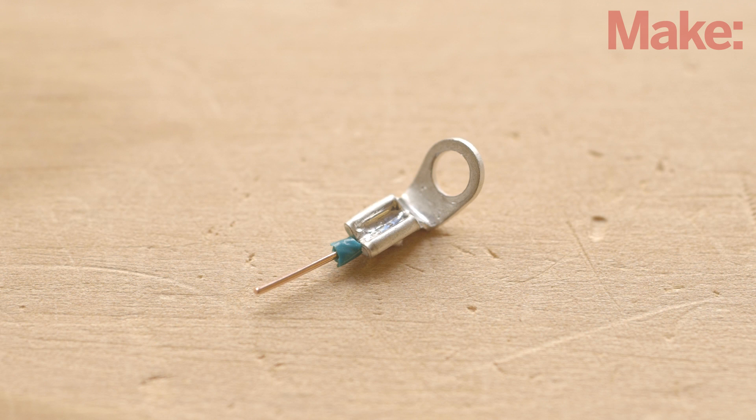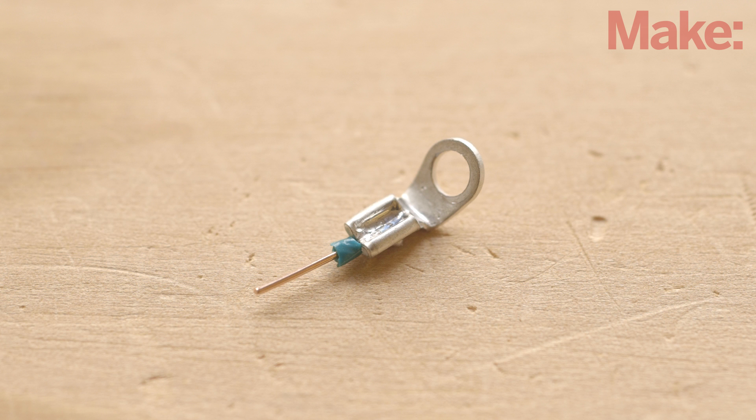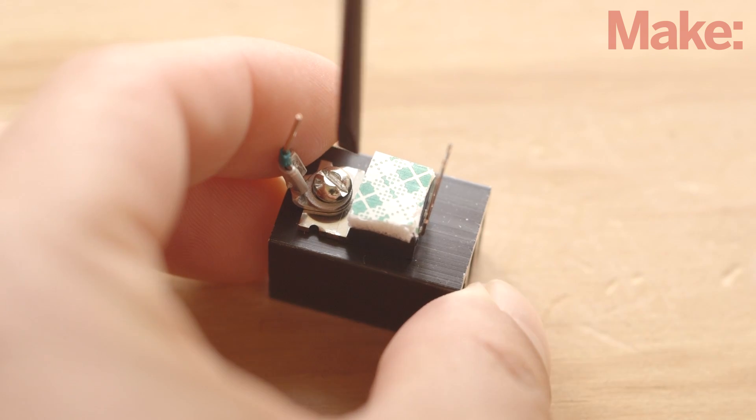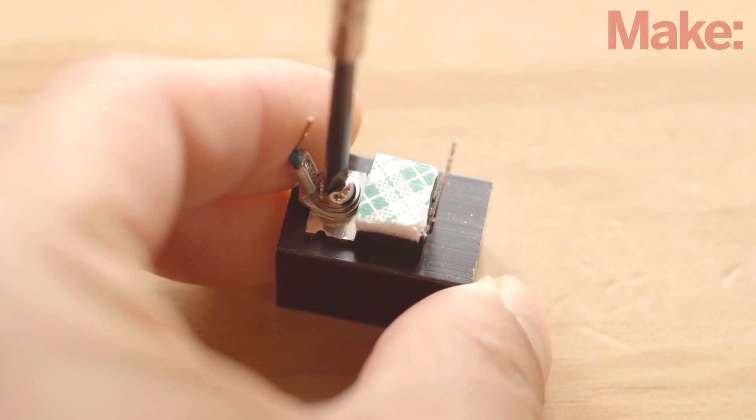Strip the end of a length of wire, grip on the uninsulated ring tongue lug, and solder it in place. Next, attach the MOSFET and the ring tongue lug to the heat sink with a machine screw.